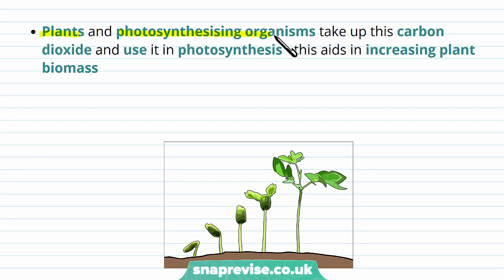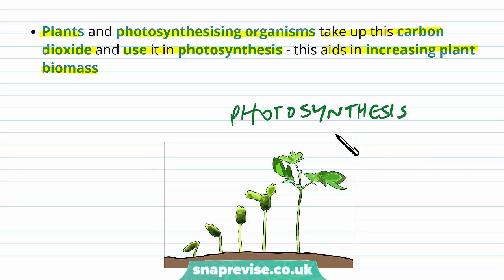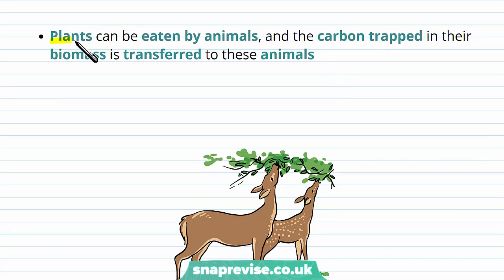Plants and photosynthesising organisms take up the carbon dioxide from the air and use it in photosynthesis. This aids in increasing the plant biomass. In photosynthesis, they use sunlight and carbon dioxide with a bit of water to make glucose and increase their biomass. The plants can then be eaten by animals, so the carbon trapped in the biomass of the plants gets transferred to the animals.